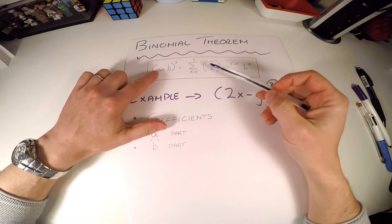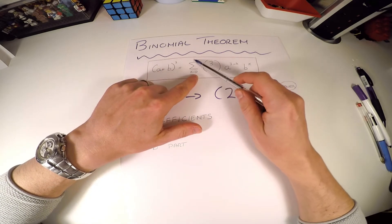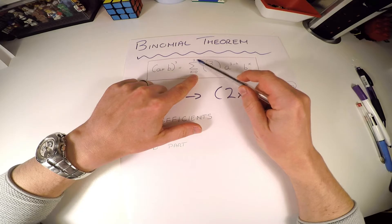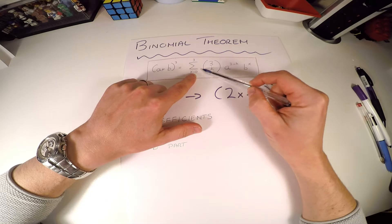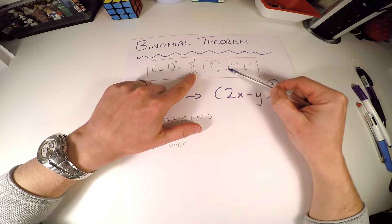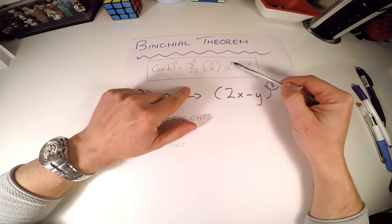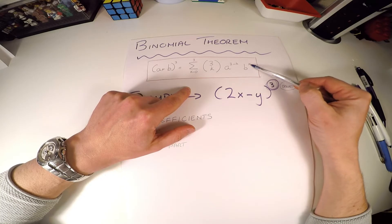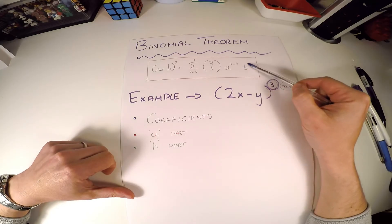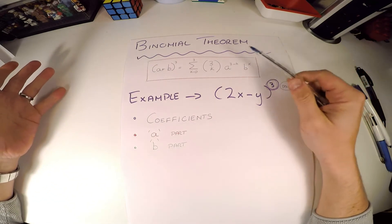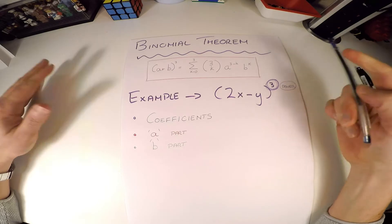The formula says: (a + b) to the power of three is the sum from zero to three of 'three choose k', multiplied by a to the power of (3 minus k) and b to the power of k. So a's power starts at three and goes down, while b's power starts at zero and goes up. It's a pretty confusing formula in series notation — you see it in the sequences and series chapter.